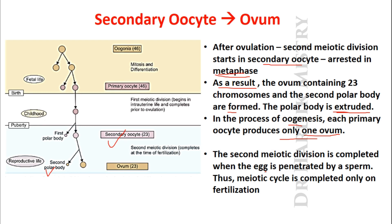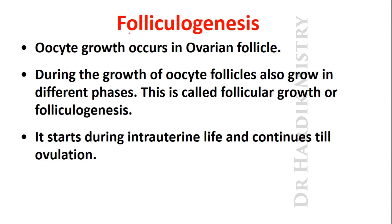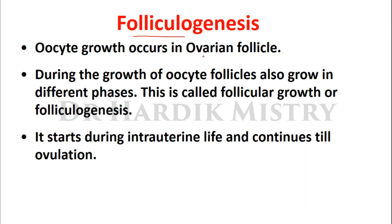To summarize the two meiotic divisions: the first meiotic division starts during fetal life, is arrested in prophase, and is completed just before ovulation. After ovulation, the second meiotic division starts and is arrested in metaphase. The second meiotic division is only completed when the egg is penetrated by a sperm - thus the meiotic cycle is completed only on fertilization.